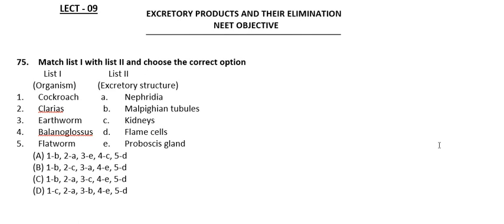Question 75: Match List 1 with List 2 and choose the correct option. List 1 has organisms and List 2 has excretory structures. For cockroach, the excretory organs are the Malpighian tubules. For Clarius batrachus — the scientific name of the catfish — the excretory organs are kidneys.